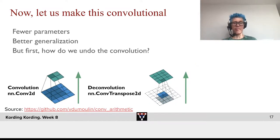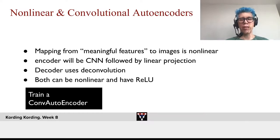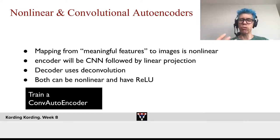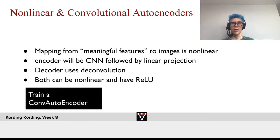And that should allow us to have fewer parameters and better generalization. So, now we do a non-linear and convolutional autoencoder. We want the mapping from meaningful features — which is how we want to interpret the images — to be non-linear. The encoder will be a convnet followed by a linear projection, and the decoder will use deconvolution. Both can be non-linear and therefore have ReLUs in it.